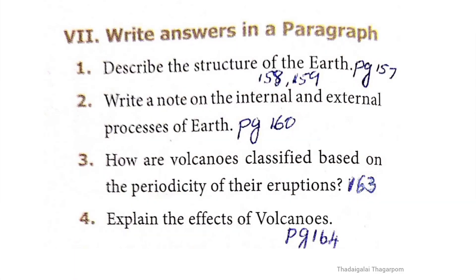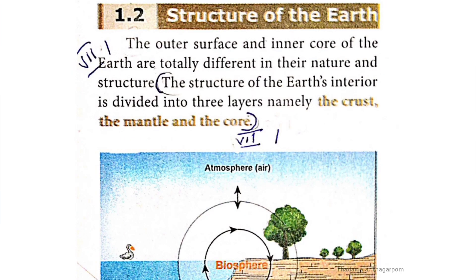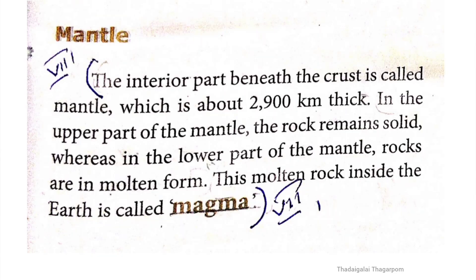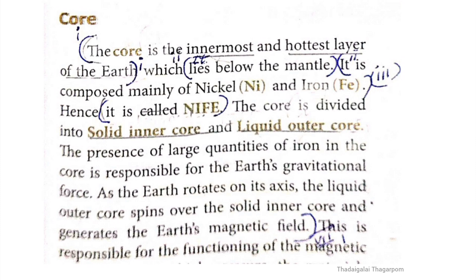Roman numeral seven: write answers in a paragraph. First question: describe the structure of the earth. Answer given in pages 157, 158, 159. The structure of the earth's interior is divided into three layers: namely the crust, the mantle and the core. The core is the innermost and hottest layer and is associated with the earth's magnetic field.